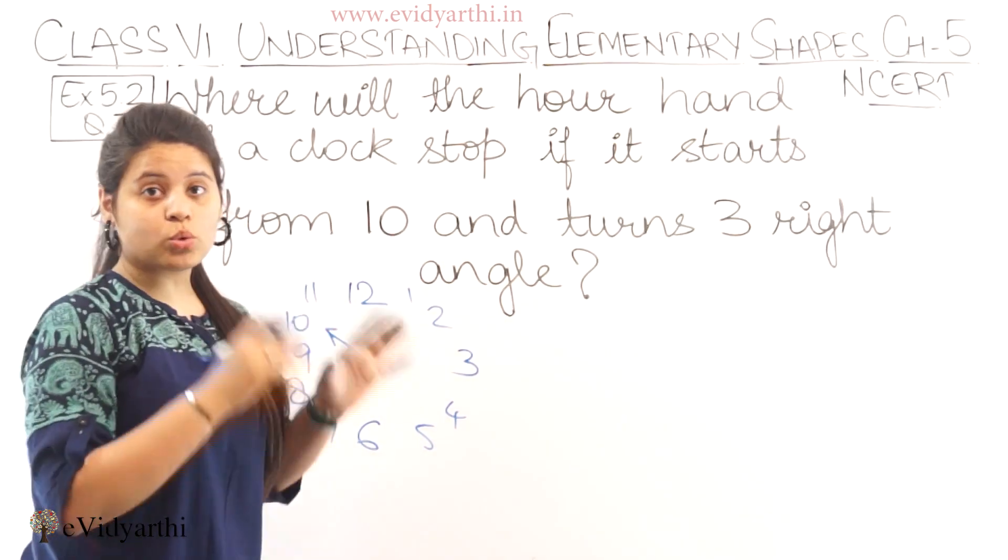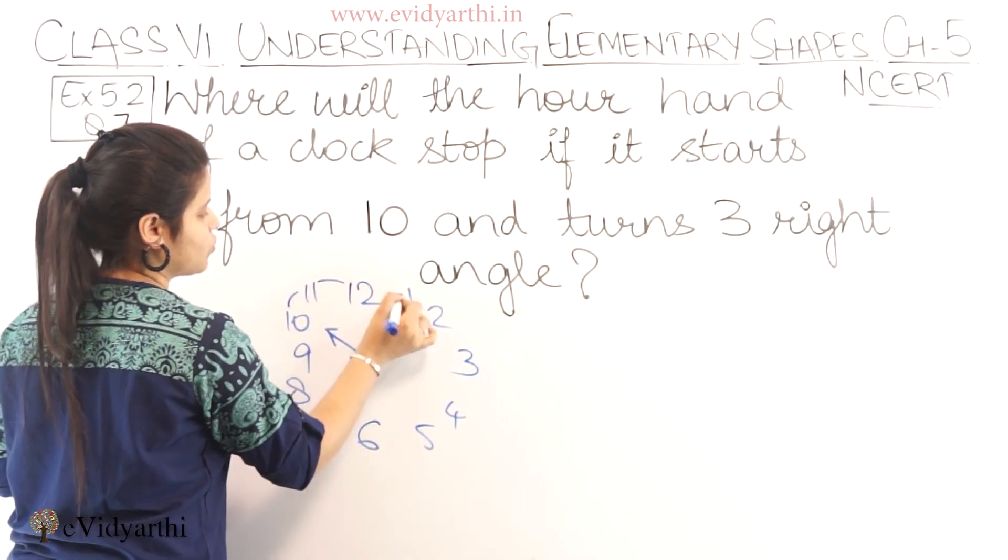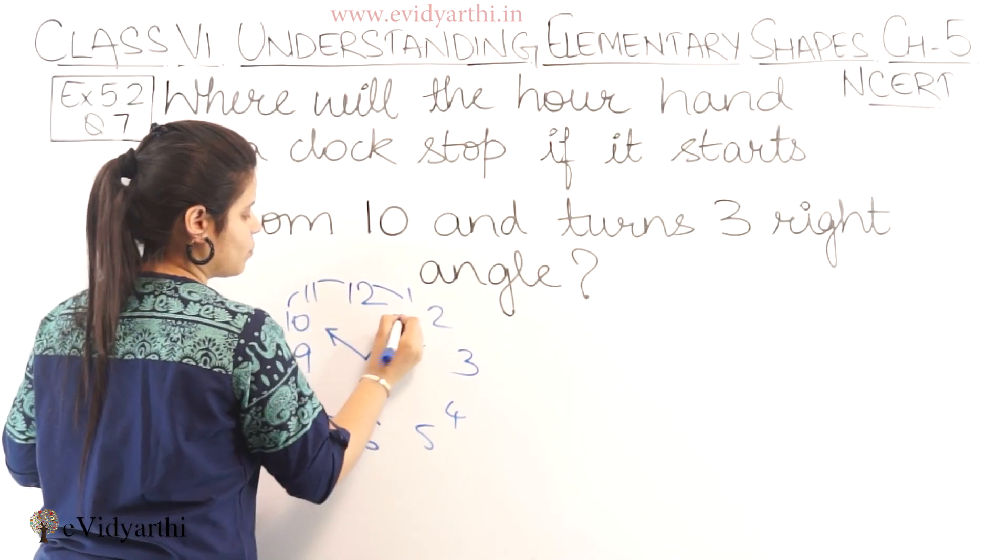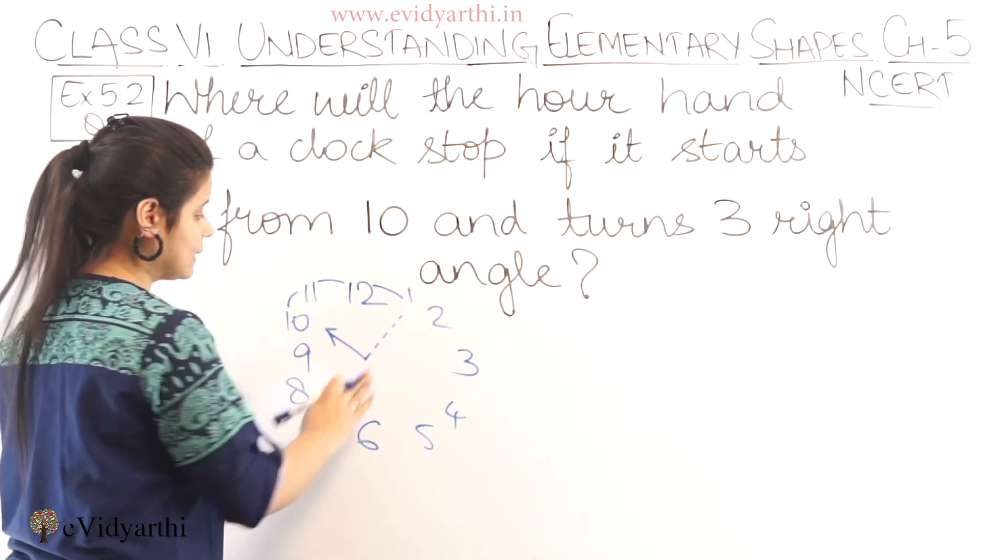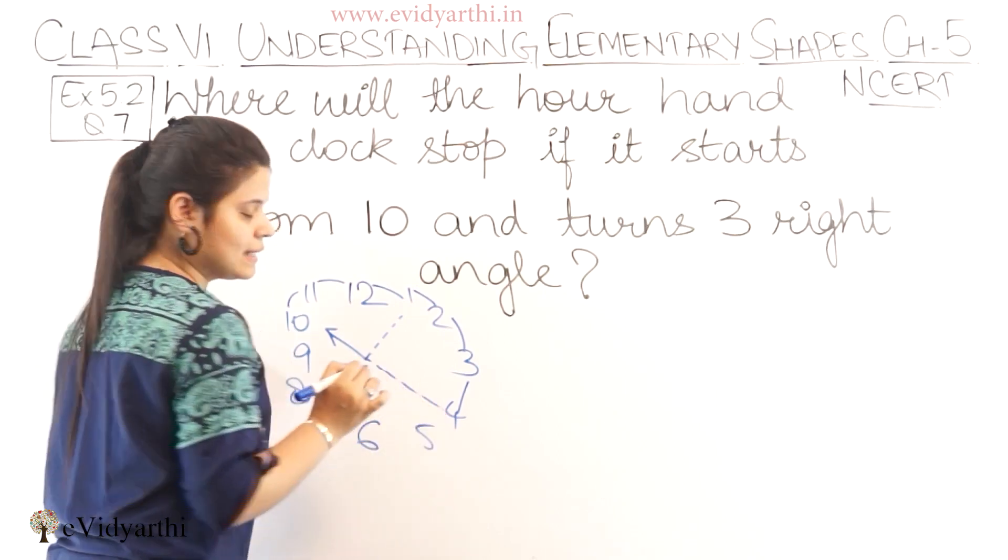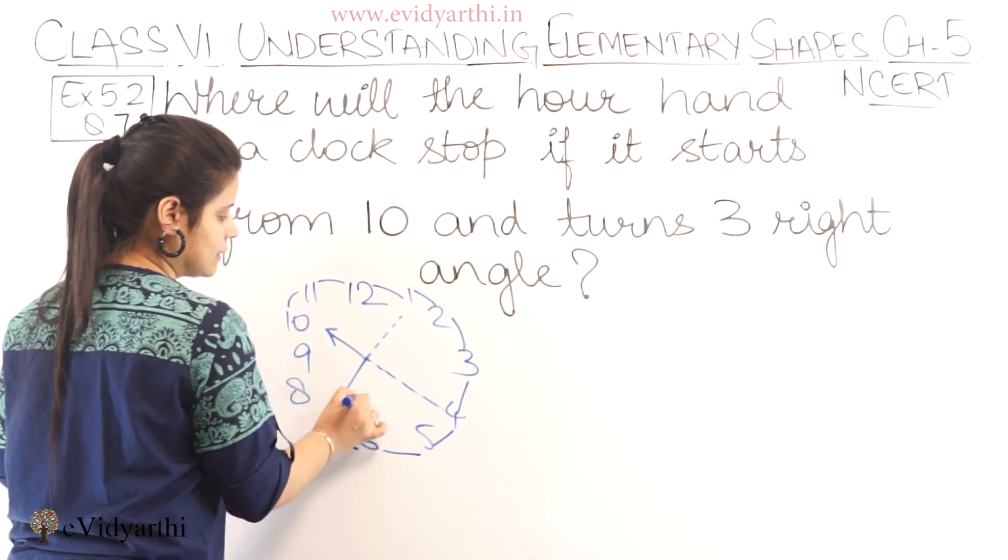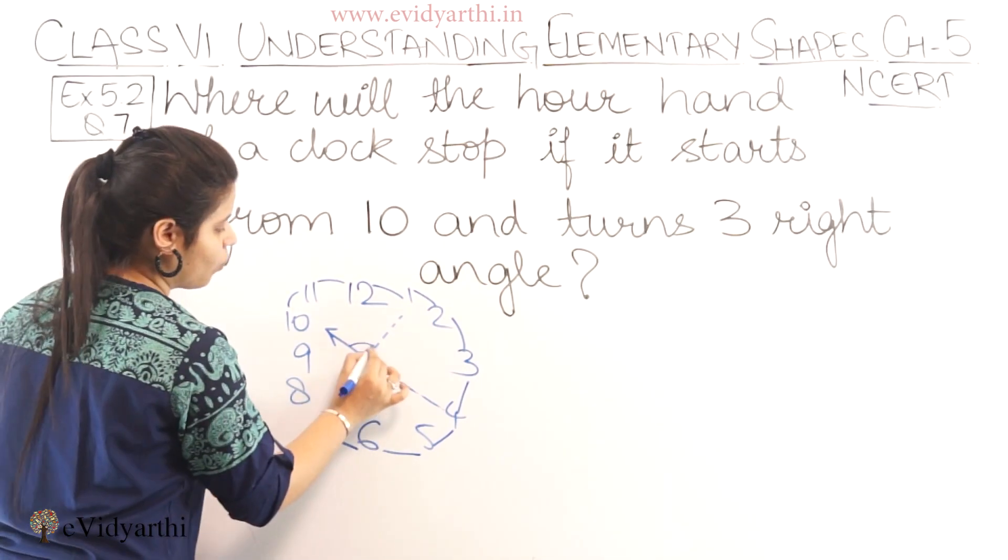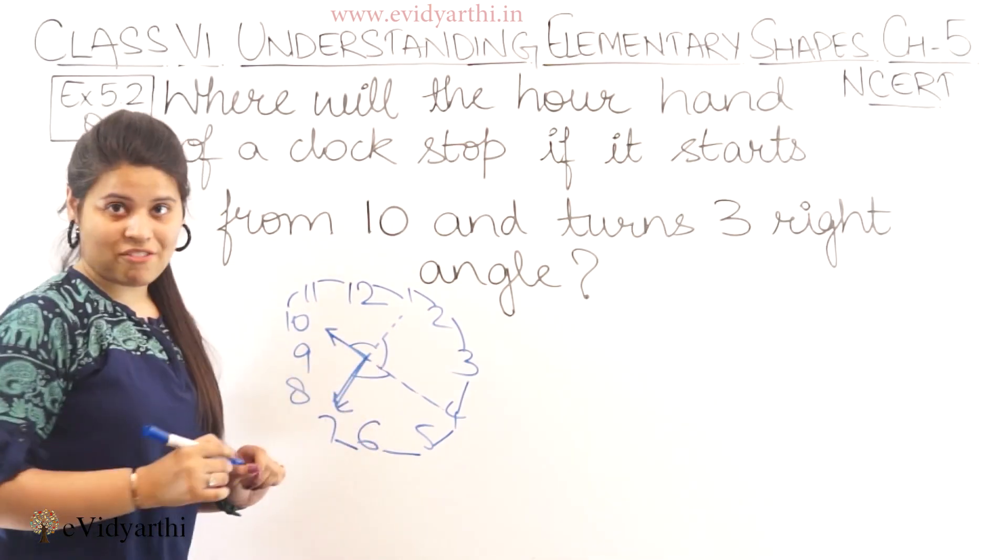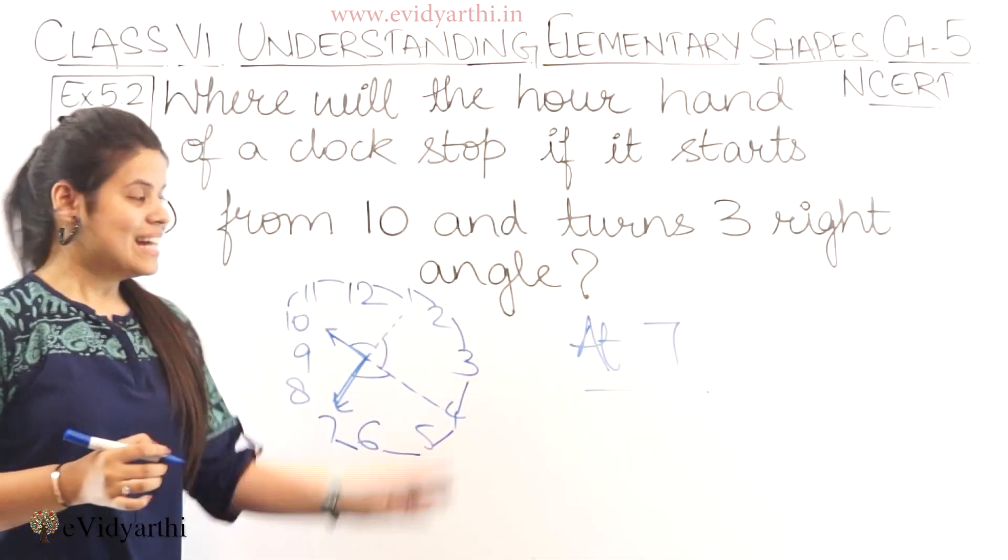From 10 it has to take 3 right angles. So 10 to 11, 11 to 12, 12 to 1. How many? One right angle because 3 steps. So up to 1 is one right angle. Then 1 to 2, 3, 4. Up to 4 is second right angle. Then 4 to 5, 6, 7. Up to 7 is third right angle. So here 1, 2, 3. Completing 3 right angles it has come at 7. So the answer will be at 7.